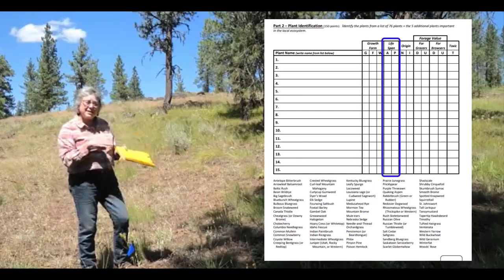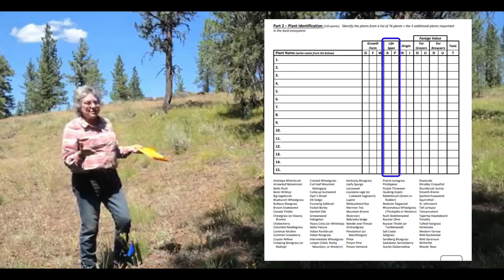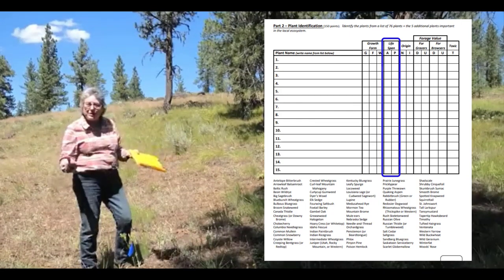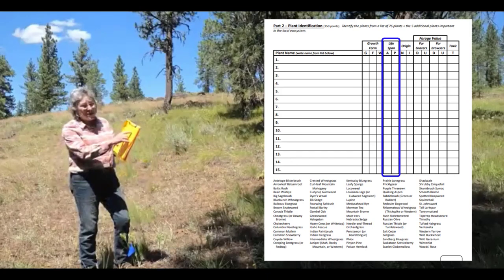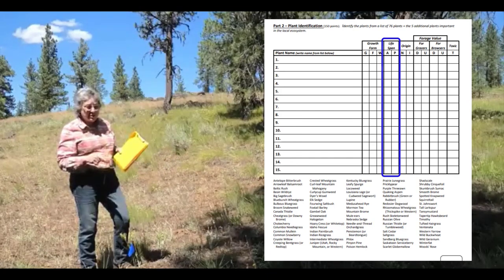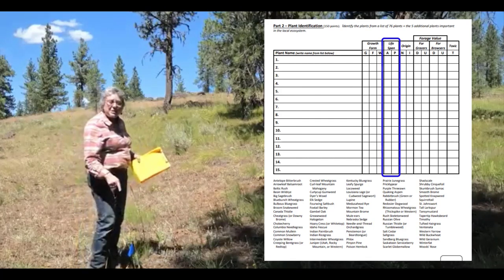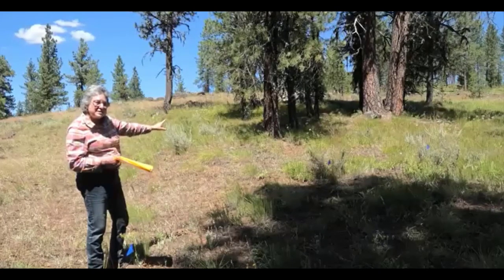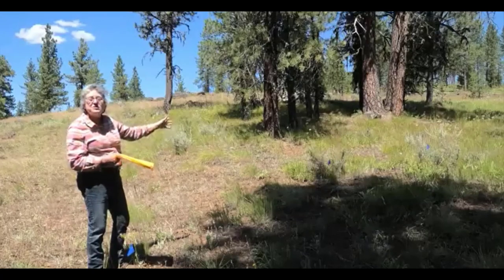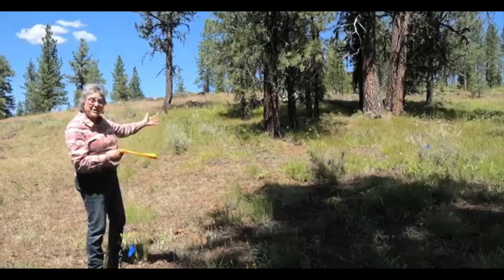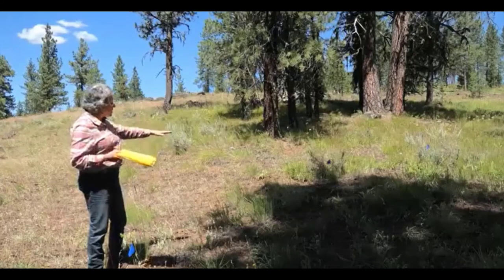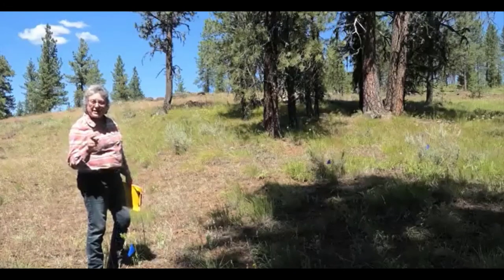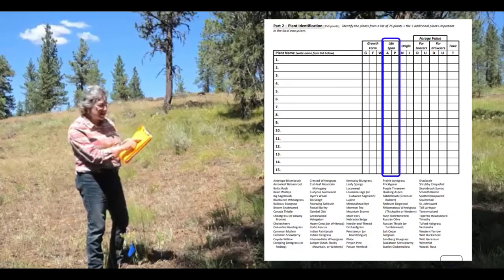The next thing to identify is life stage — is it annual or perennial? Most range plants are perennial because rangeland is a type of land clothed with perennial plants. But there are some annuals, like cheatgrass. You need to know the difference: a perennial plant is going to come back every year — some of these plants live hundreds of years, so they don't need to reproduce by seed very often. Annuals, on the other hand, are all about seeds — the annual plant won't come back unless it has seeds.